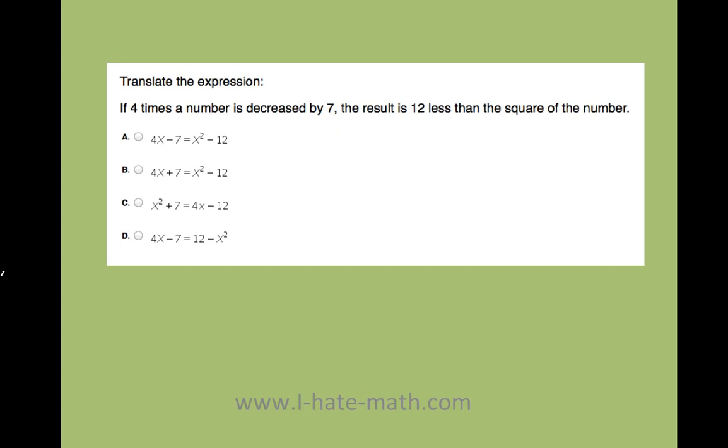If 4 times a number is decreased by 7, the result is 12 less than the square of the number. So how do we do this?